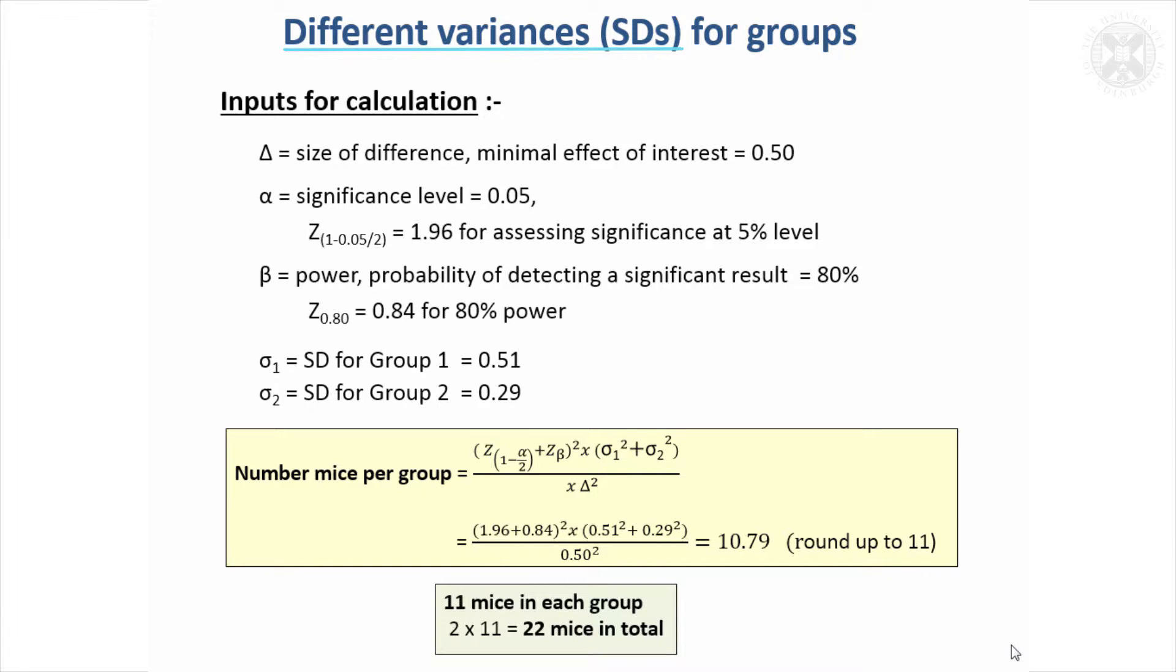So supposing we knew that one of the groups, perhaps the active group, the results were going to be variable as to how they responded to this active intervention and there was a greater amount of variability compared to the controls which varied less.